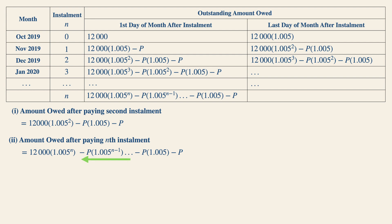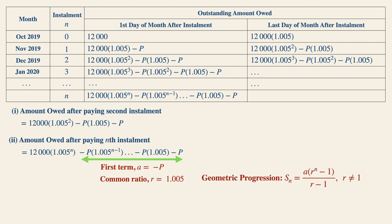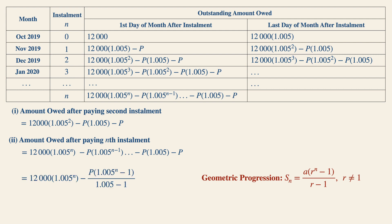Notice that these terms follow a geometric series with first term a equal to minus P and common ratio 1.005. Therefore, this expression will be condensed into the sum of the first n terms of a geometric series, giving: 12,000 × 1.005^n minus P × (1.005^n − 1) / (1.005 − 1).